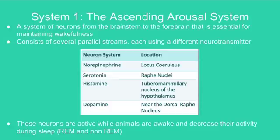Norepinephrine is located in the locus ceruleus. Serotonin is located in the raphe nuclei. Histamine is located in the tuberomammillary nucleus of the hypothalamus. And dopamine is located near the dorsal raphe nucleus. These neurons are active while animals are awake and decrease their activity during sleep, both REM and non-REM.